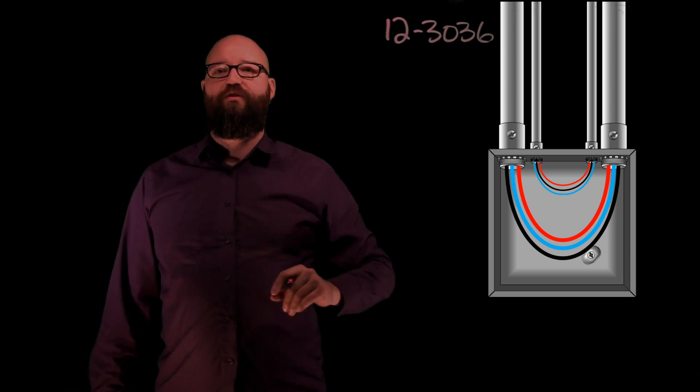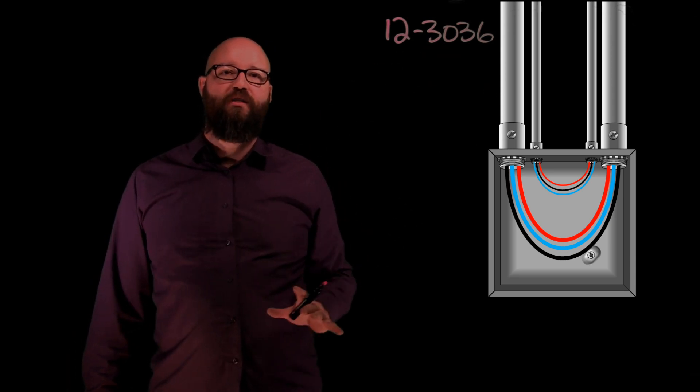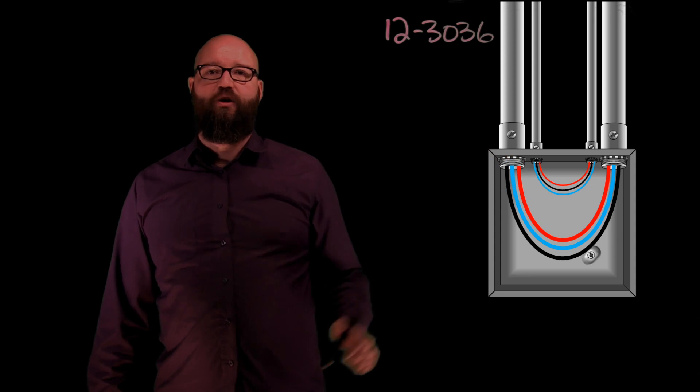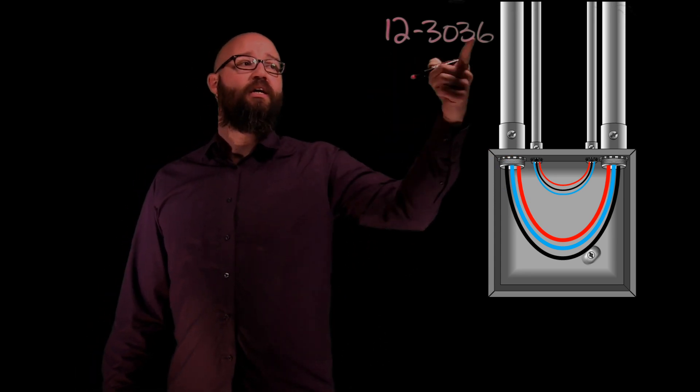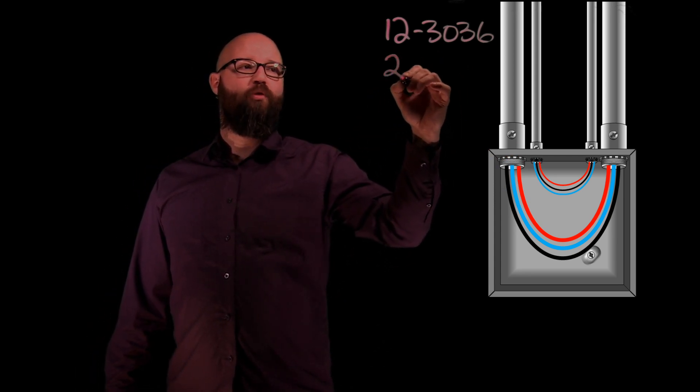12-3036 is where we take a look at pull boxes that contain conductors larger than a number four gauge conductor. So specifically what we're going to be looking at for sizing our U-pull junction box is 12-3036 sub rule two.